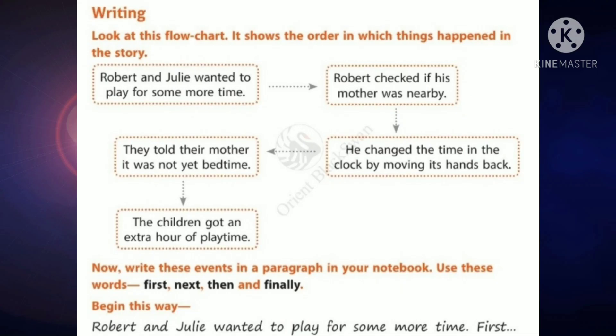Look at this flowchart. It shows the order in which things happened in the story. You can see some boxes with sentences, and you can also see the arrow marks. The arrow marks show the sequence of things that happened in the story.